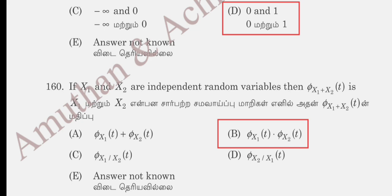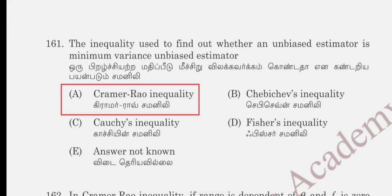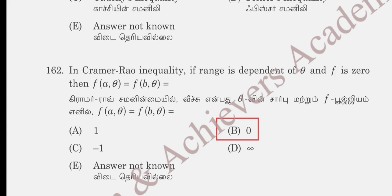This is a characteristic function based problem. If X1 and X2 are independent, then the characteristic function of X1 + X2 at t is the product of the characteristic function of X1 at t and X2 at t. Option B is the correct answer. For question 161 on inequalities used to find whether an unbiased estimator is the minimum variance unbiased estimator: in the Cramér-Rao inequality, if the range is dependent on theta, then F(A, theta) = F(B, theta) = 0. Option B, 0, is correct.